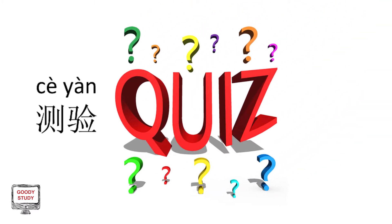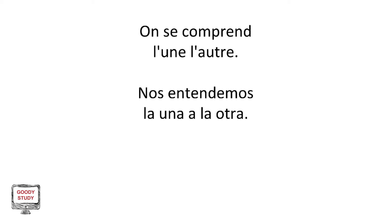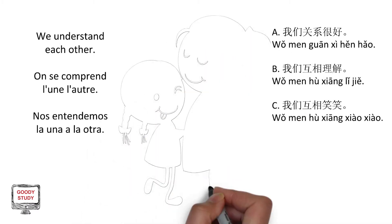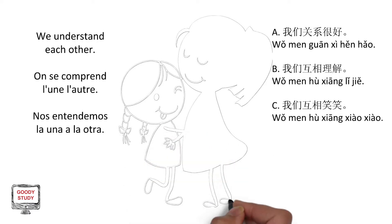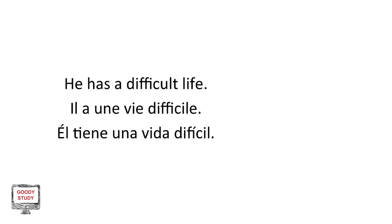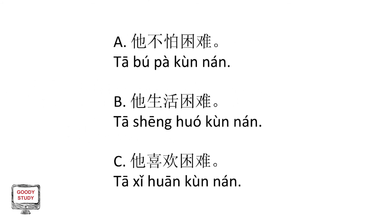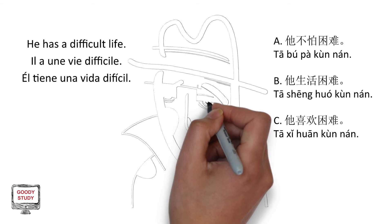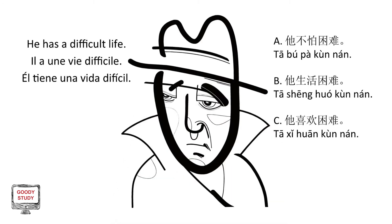测验！(Quiz!) 然而下起了大雨 — A. 我们关系很好 B. 我们互相理解 C. 我们互相笑笑。A. 她不怕困难 B. 她生活困难 C. 她喜欢困难。